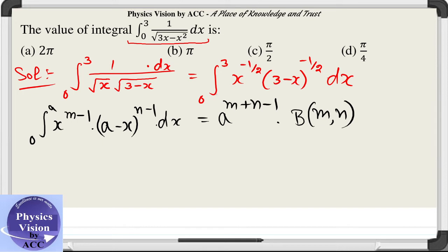Now comparing the values, m minus 1 is equal to minus half and n minus 1 is equal to minus half. We got the values of m and n both are equal to half plus half.